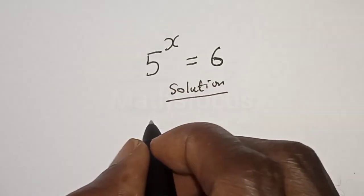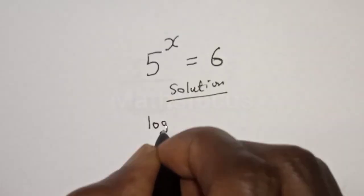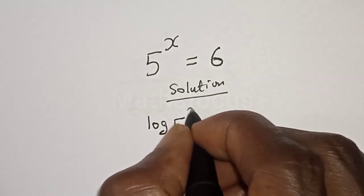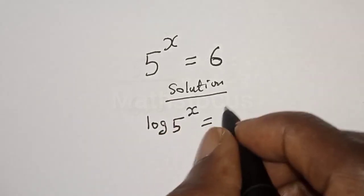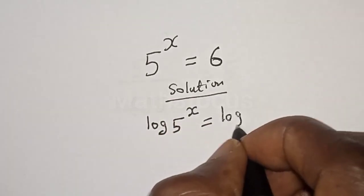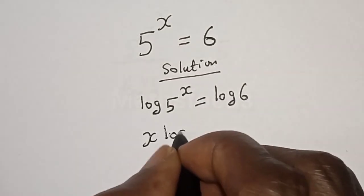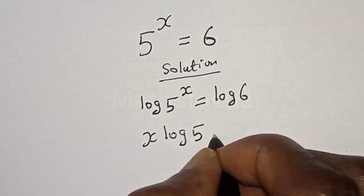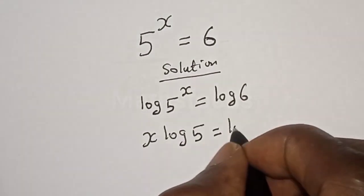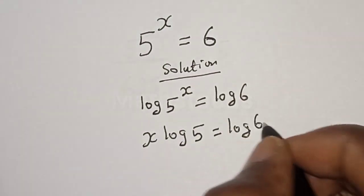Let's take the log of both sides. Log 5 raised to power s is equal to log 6. Then, s log 5 is equal to log 6.